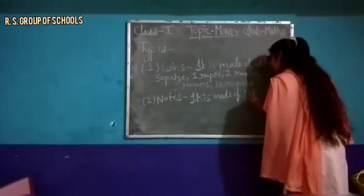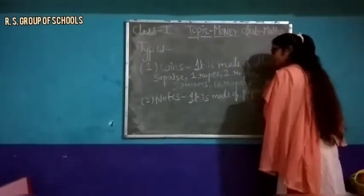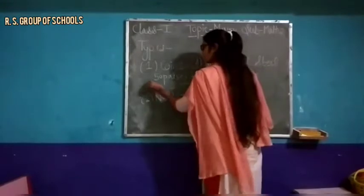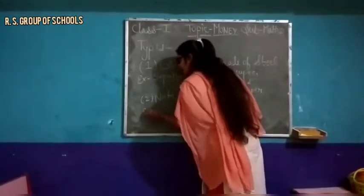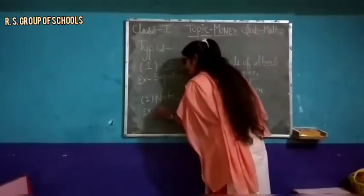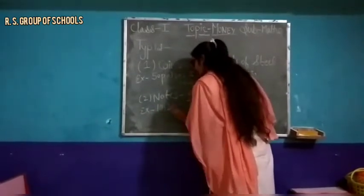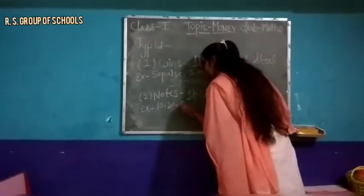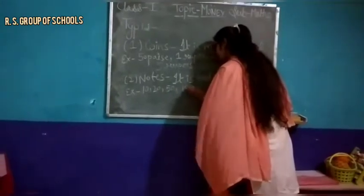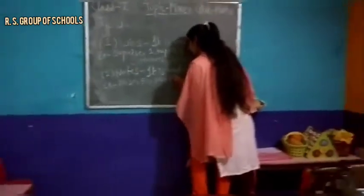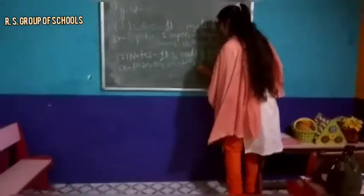Notes paper se milke bane hote hai. Types mein hai: ten, twenty, fifty, hundred, two hundred, and five hundred. Okay.